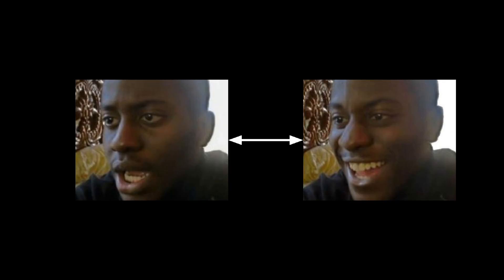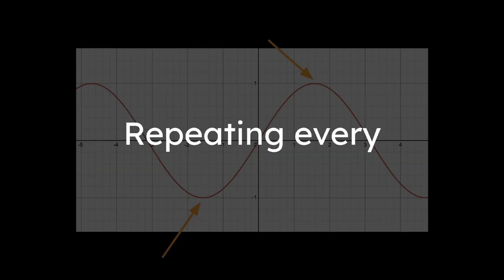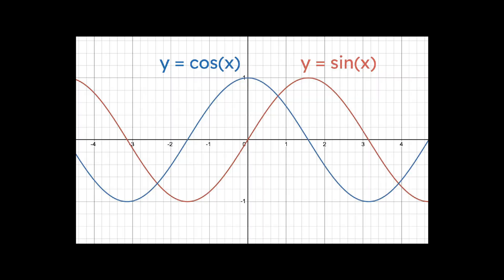Question, what happens if you graph y equals sine of x? You get a wave that oscillates between negative 1 and 1, repeating every 2 pi radians. Cosine looks the same but starts at 1 when x equals 0.